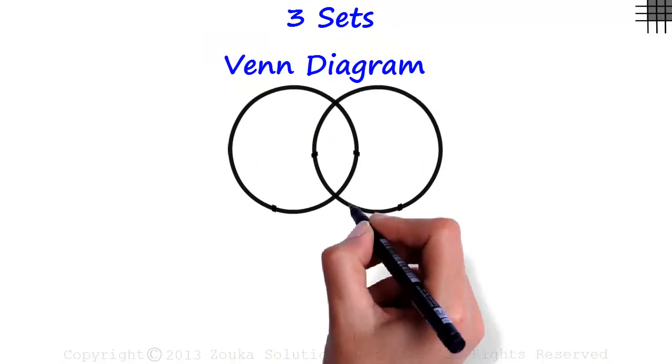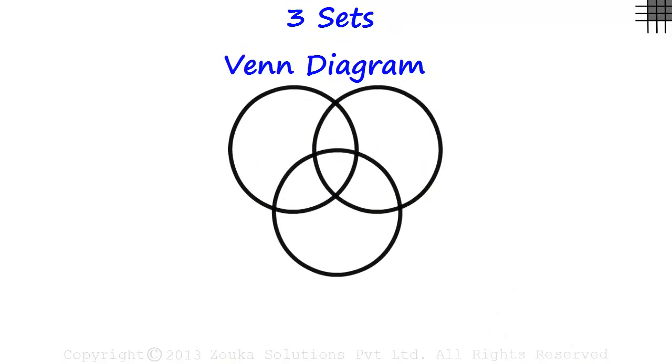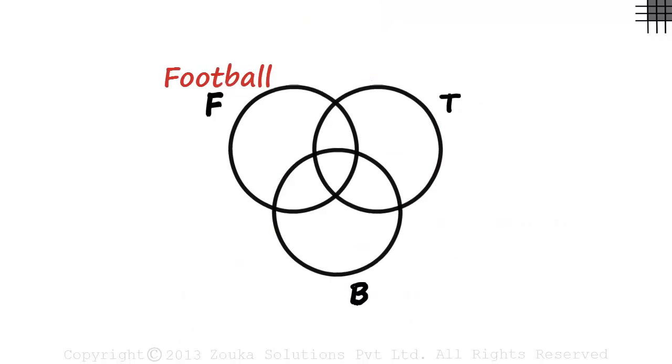This is a 3-set Venn Diagram. The three sets are F, T and B of students playing football, tennis and basketball respectively.